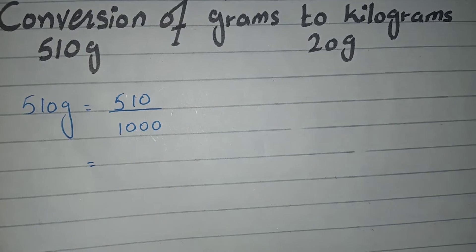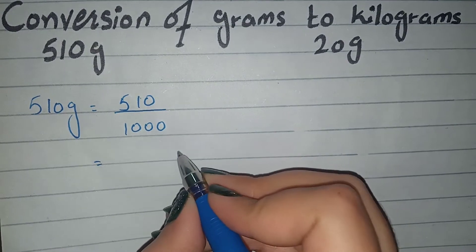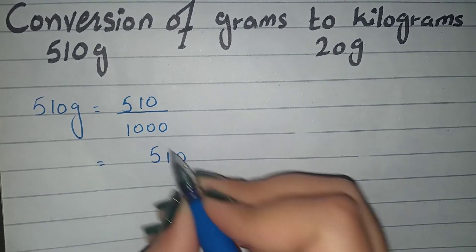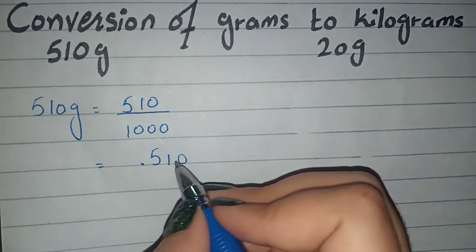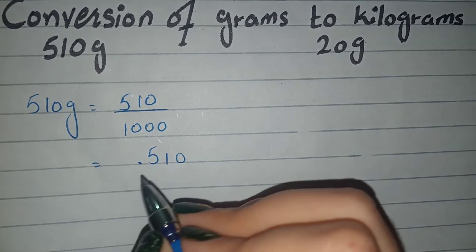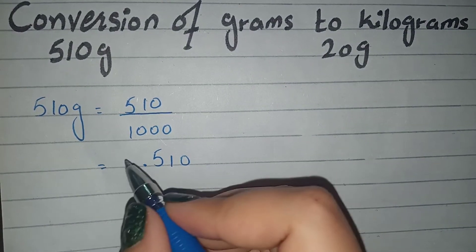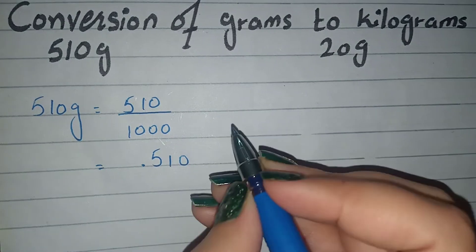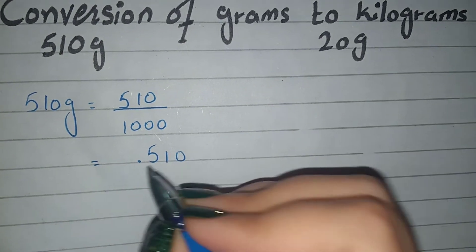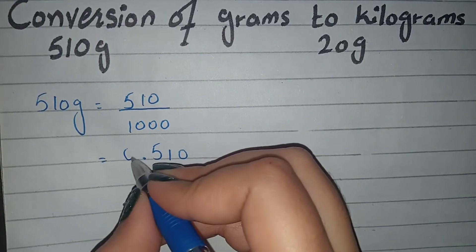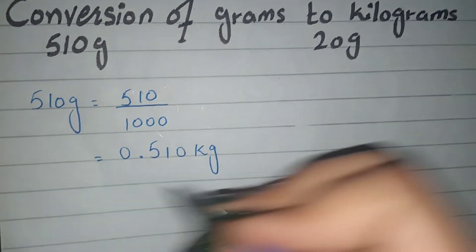We will match 3 decimal places. These are 3 digits. We have to have 3 digits. We put a point first, and since it is a three-digit number, we have three decimal places — no extra number needed, so we put zero before the point. We have converted 510 grams into kg.